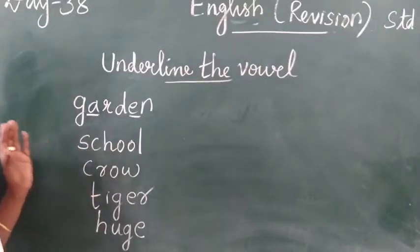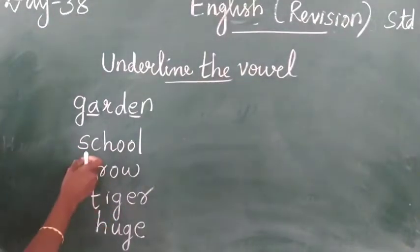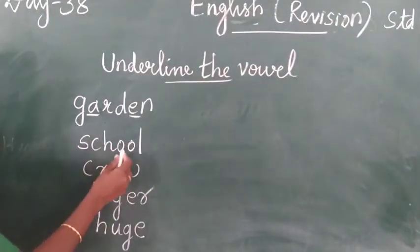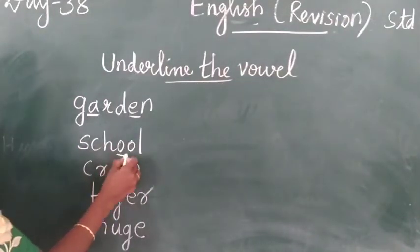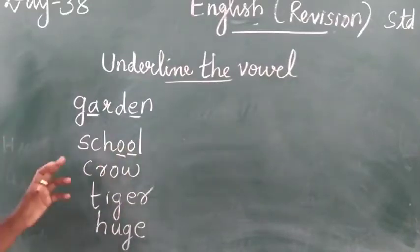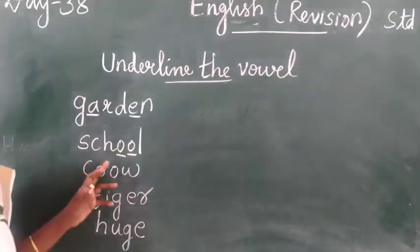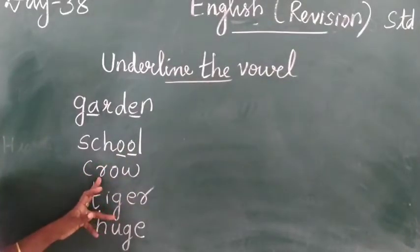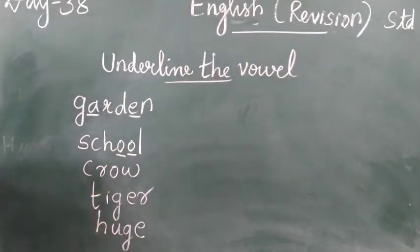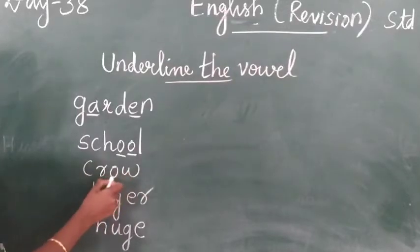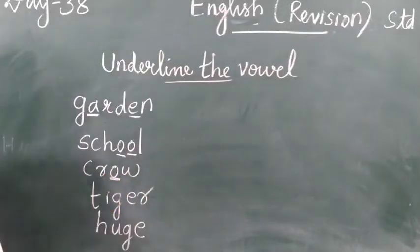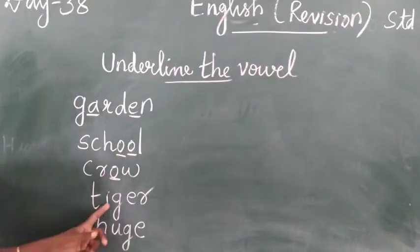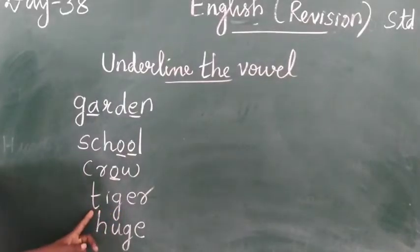Underline the vowel. In school, O is the vowel. These are vowels. Next, crow: C-R-O-W. O is the vowel.